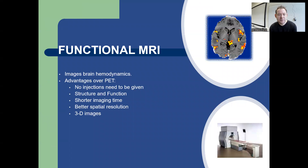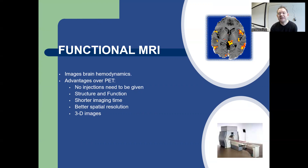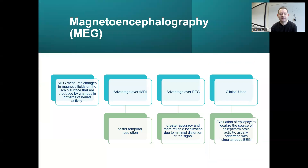Looking at functional MRI — brain hemodynamics — the advantages over PET scans include: no injections needed, structure and function can both be determined, shorter imaging time, better spatial resolution, and you get 3D images. You get temporal resolution with structural MRI, but spatial resolution is particularly good for fMRI.